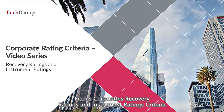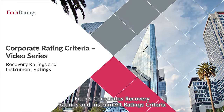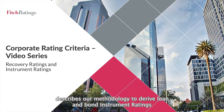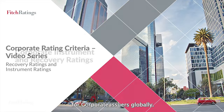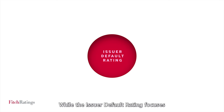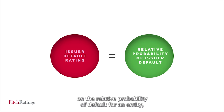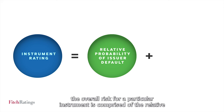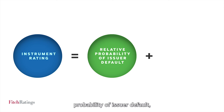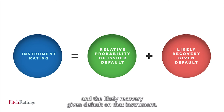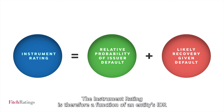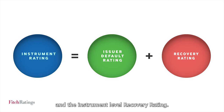Fitch's Corporates Recovery Ratings and Instrument Ratings Criteria describes our methodology to derive loan and bond instrument ratings for corporate issuers globally. While the issuer default rating focuses on the relative probability of default for an entity, the overall risk for a particular instrument is comprised of the relative probability of issuer default and the likely recovery given default on that instrument. The instrument rating is therefore a function of an entity's IDR and the instrument-level recovery rating.